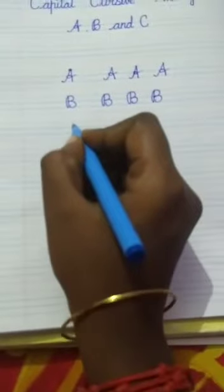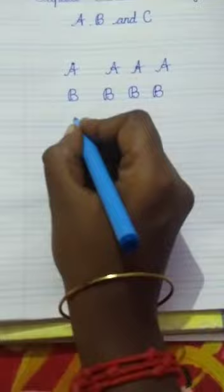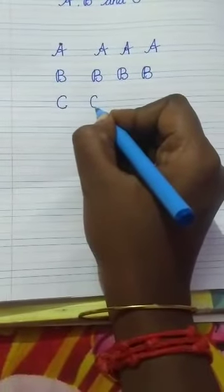Write capital C. It is very simple. Draw a line. Draw a curve like this. What letter is this? C. Draw a curve like this. C.